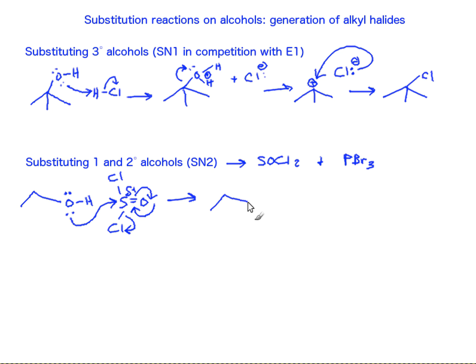Now what that does is form this intermediate where our oxygen has formed a bond with the sulfur, and we have released a chloride leaving group. This oxygen now has a positive charge. This alteration of our alcohol has generated a good leaving group instead of this terrible hydroxide leaving group. And so this can undergo an SN2-based reaction.